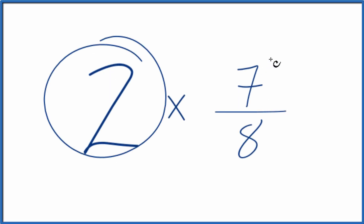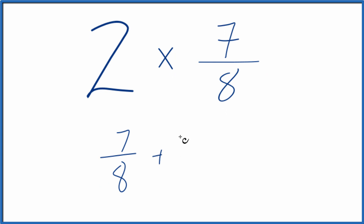Let's multiply 2 times 7 eighths. Here's how we do it. So we could just take 7 eighths and add it to 7 eighths. So 7 eighths plus 7 eighths. So we have 1, 2. There's our 2 times 7 eighths.